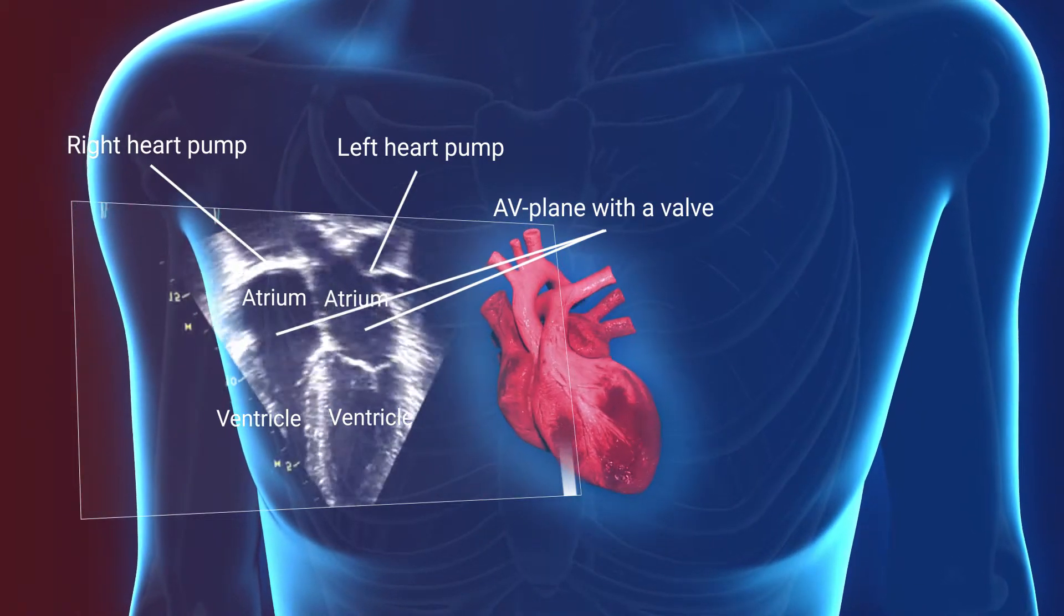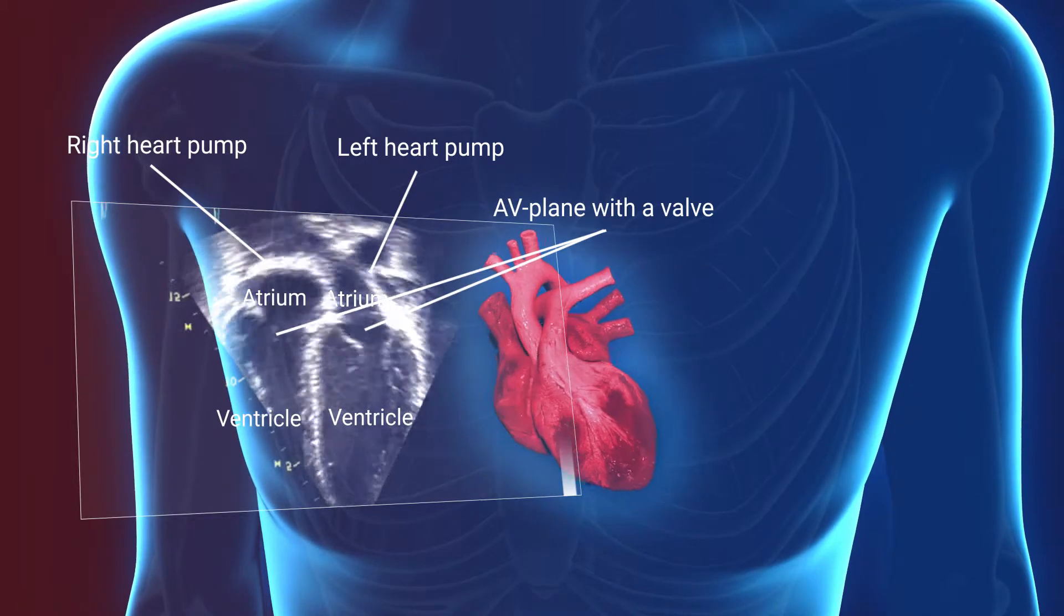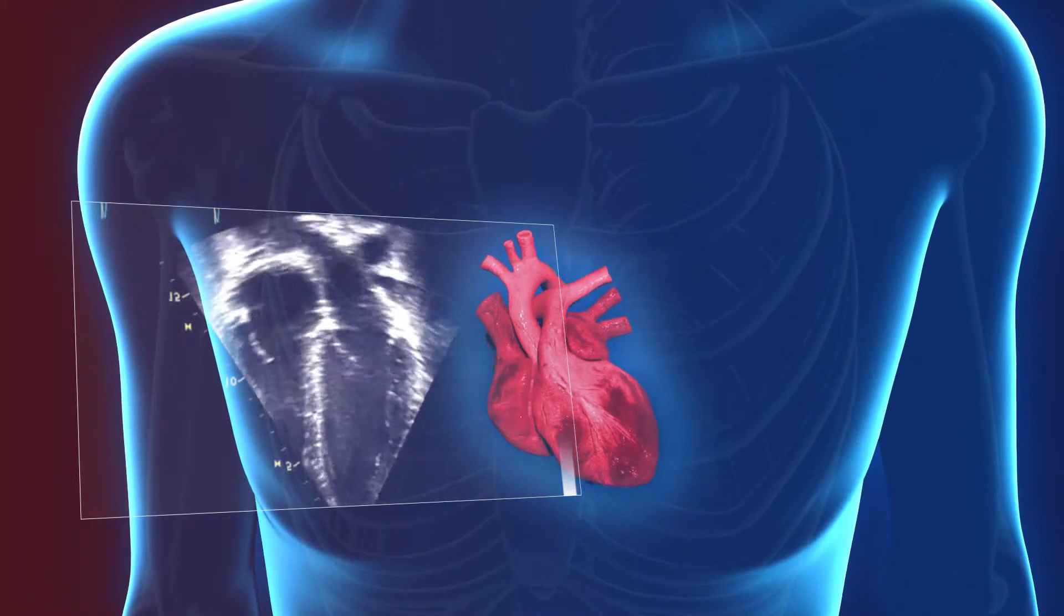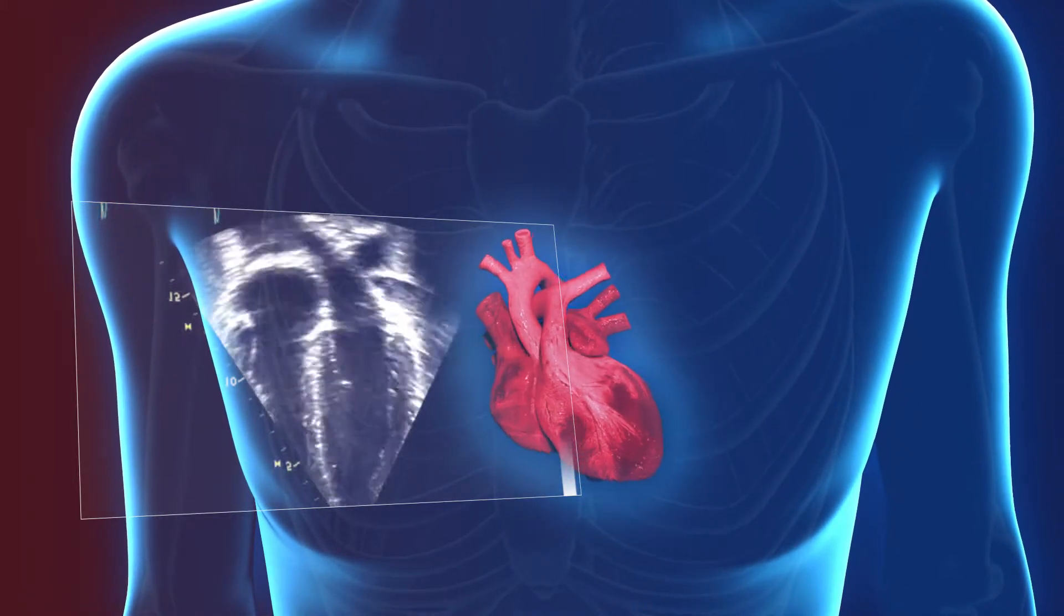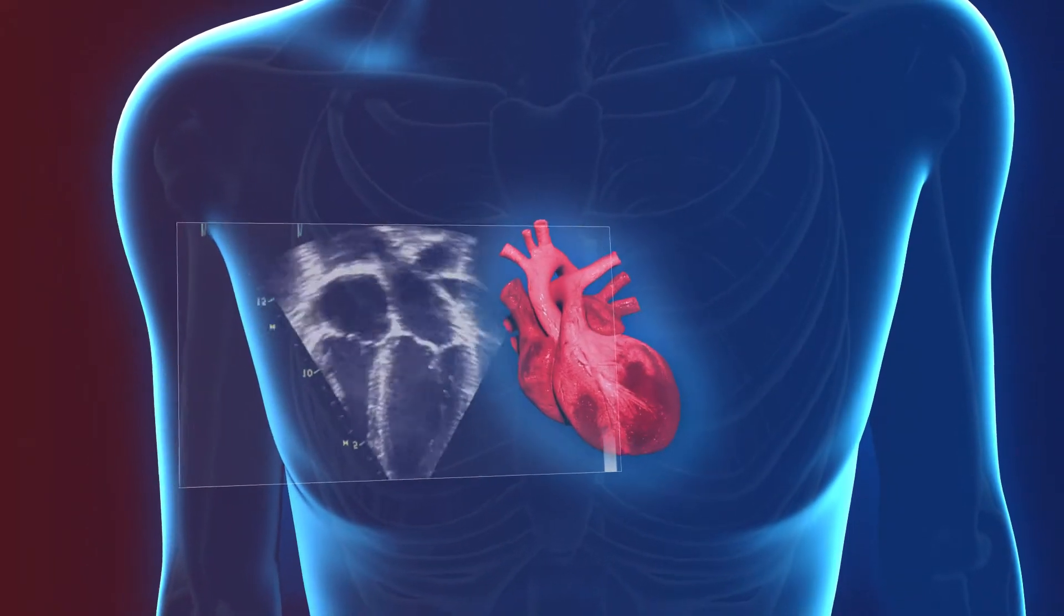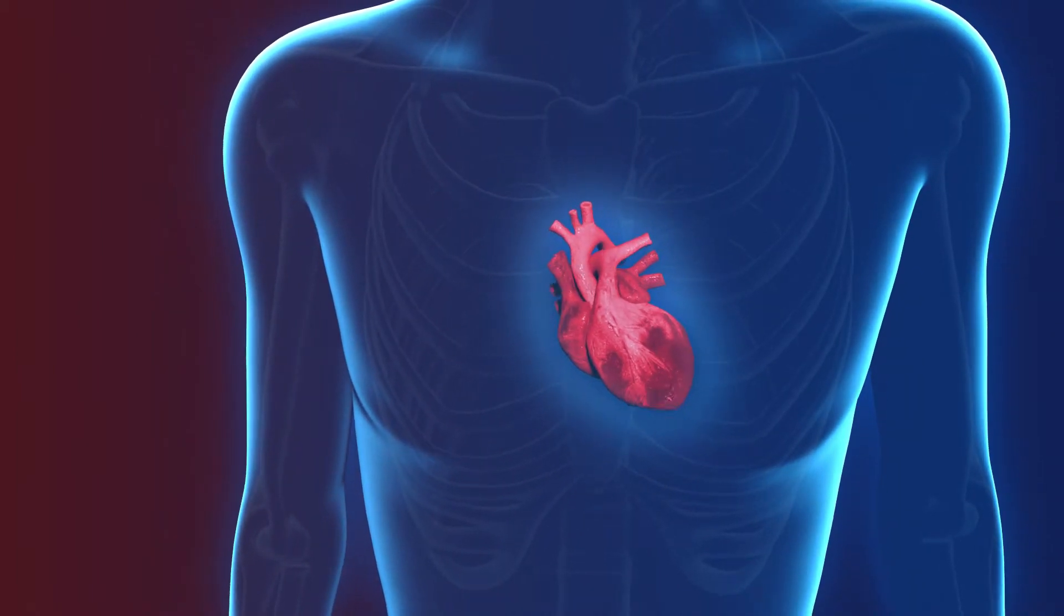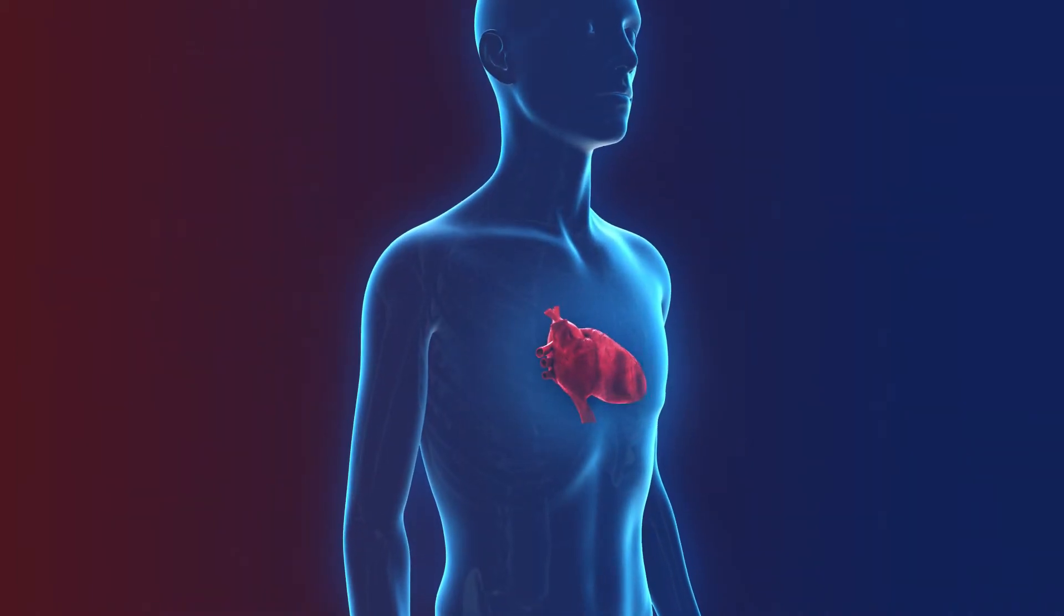When the AV plane moves towards the ventricle, the valve closes, causing pressure to increase in the ventricle to pump the blood in pulses. When the AV plane moves towards the atrium, the valve is opened again, allowing the available blood in the atrium to once again fill the ventricle.